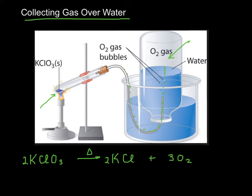Now, we don't just have oxygen in there, even though it looks like it in this picture. Every time you collect a gas over water, you also have water vapor. So also present here is water vapor. So back to Dalton's Law, the total pressure in that little space there is the partial pressure of the water vapor plus the partial pressure of the oxygen.